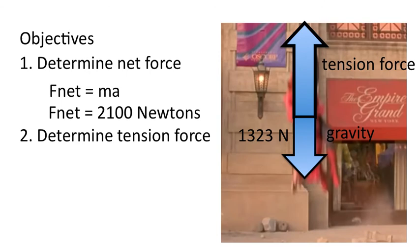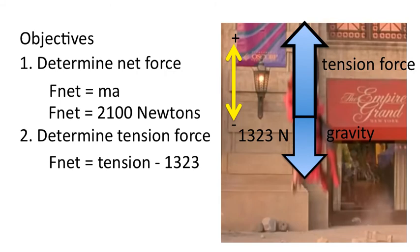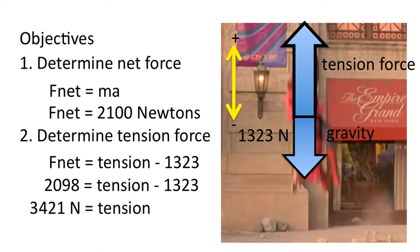Now in this situation, the positive direction is upwards. Why upwards? Well, because that's the direction of movement, that's the direction of acceleration. And so when we write our F net statement, net means the sum of all forces. It'll be the tension force, subtract force of gravity, which is 1,323. We know our F net is 2,098 newtons, and our overall tension is 3,421 newtons, or in significant digits, 3,400 newtons, two significant digits once again.